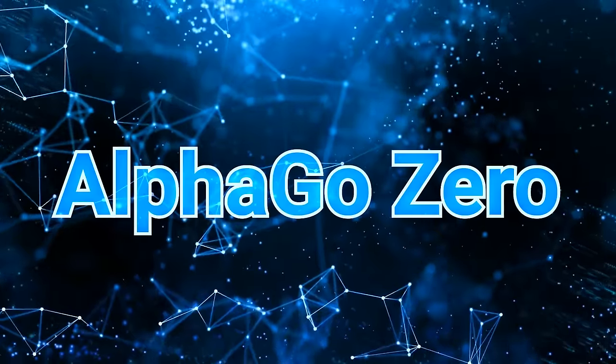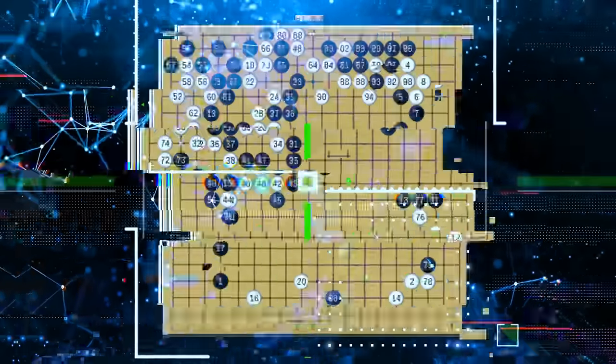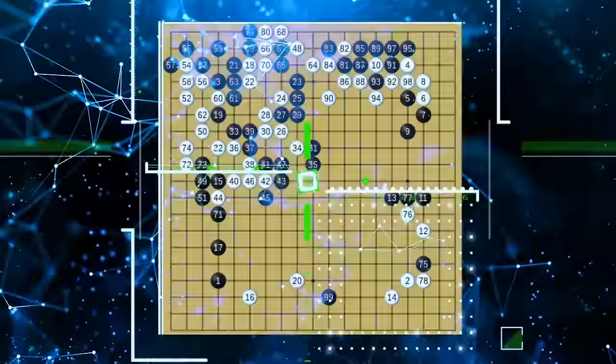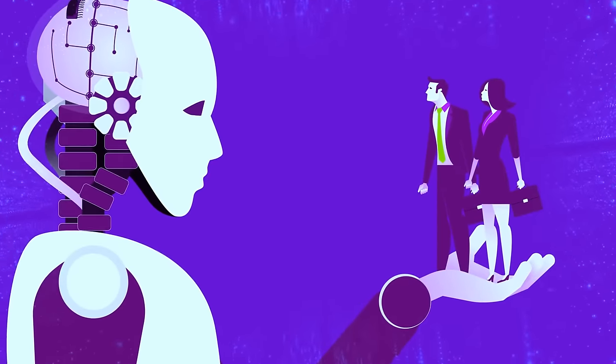Soon enough, AlphaGo Zero was developed. The difference was this iteration of the software was a self-learner. Scientists practically gave it a puzzle to solve without the picture on the box. No human help, no nudges. It had to rely merely on its own brain power.